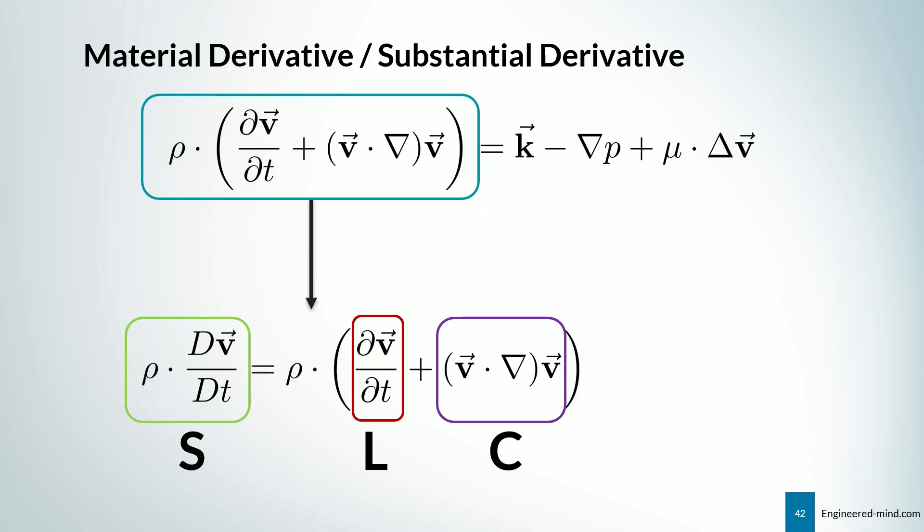So we can even rewrite the terms in the brackets of our Navier-Stokes equation. We have something called the Lagrangian reference frame and the Eulerian reference frame. So we can see on the left-hand side where we have the so-called substantial derivative, which is nothing else a Lagrangian reference frame. And on the right-hand side, how we derived it is the so-called Eulerian frame. We have the local change in red and the convective term in purple.